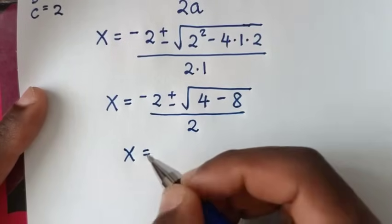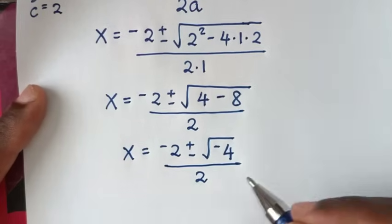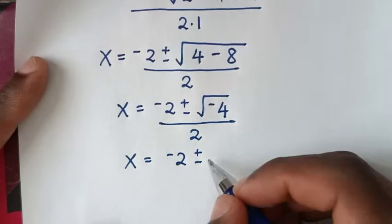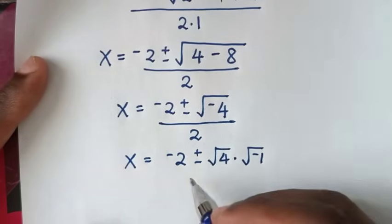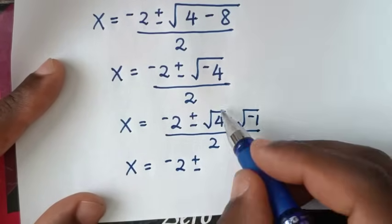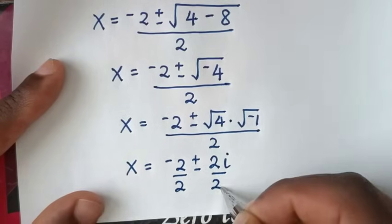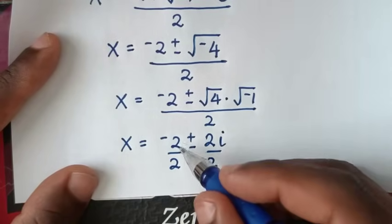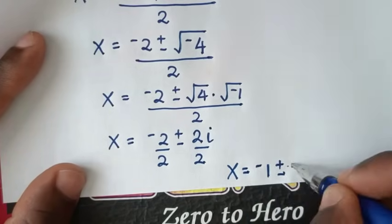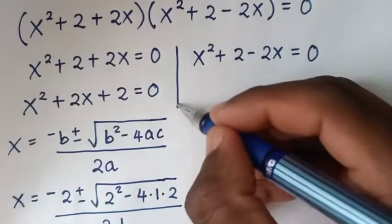Then it will be x = −2 ± √(−4), and √(−4) = √4 · √(−1) = 2i, over 2. So x = −2/2 ± 2i/2, which gives x = −1 ± i. So from here we have two solutions of x because of the plus or minus.